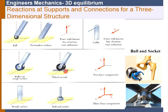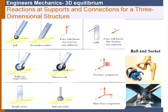The rigid body on the wheel-rail system can rotate about the y-axis and also slightly about the x-axis, so no moment reactions arise. There is also no reaction along the x-axis because the wheel can move along the rail. So only the two force reactions Fy and Fz are present.